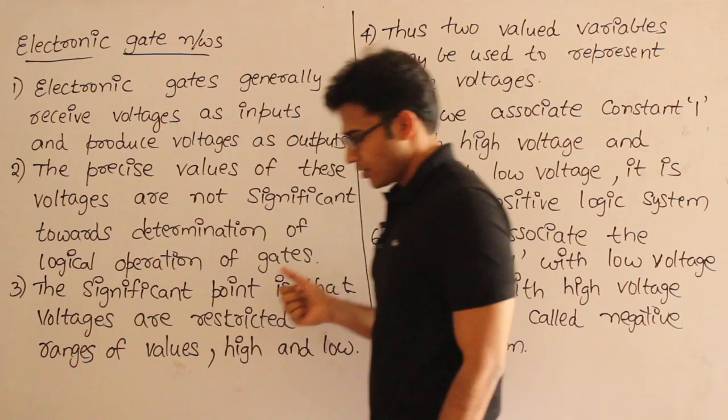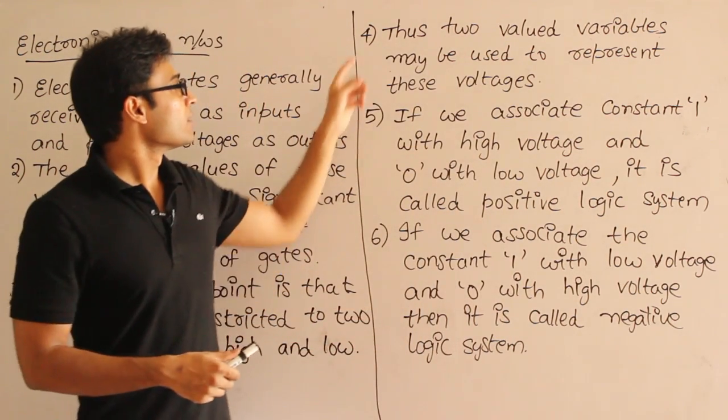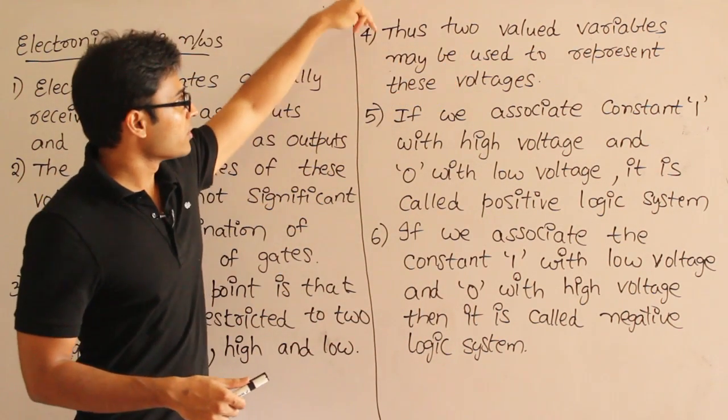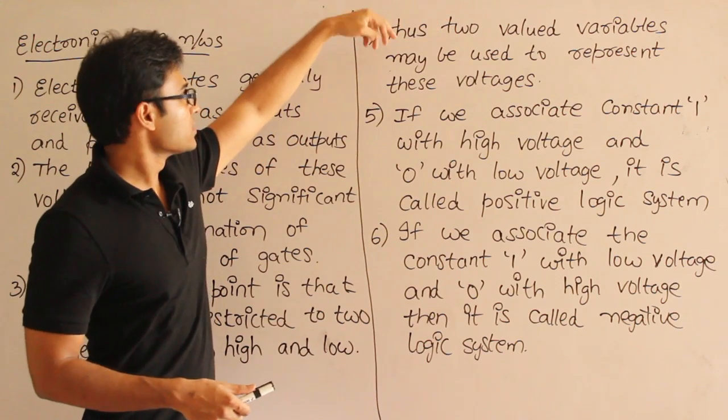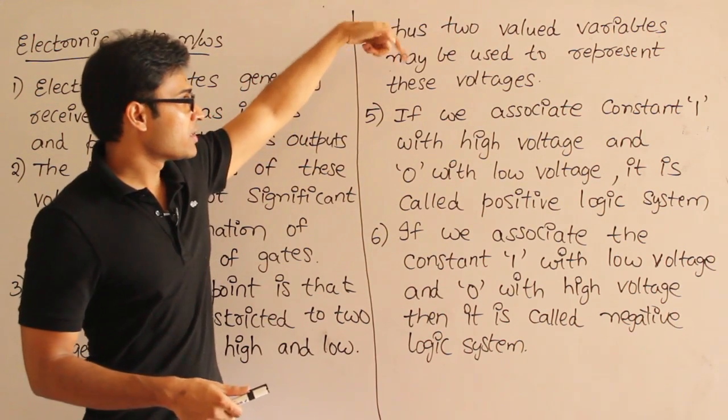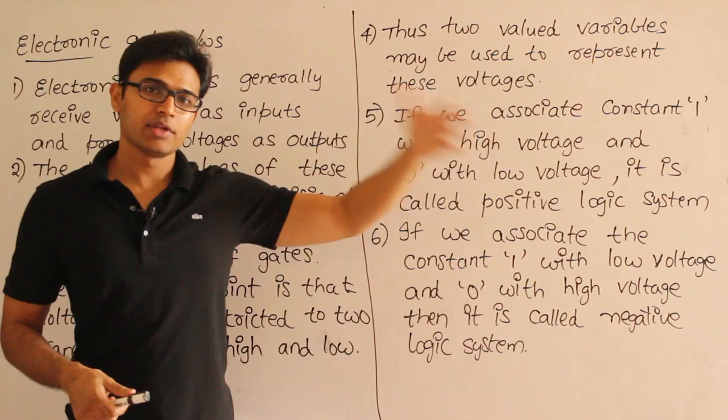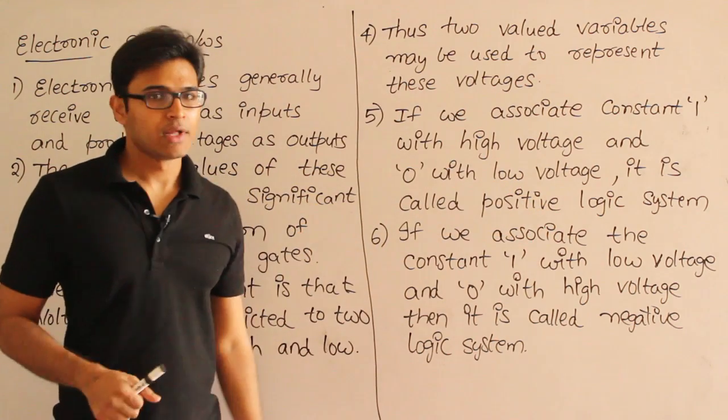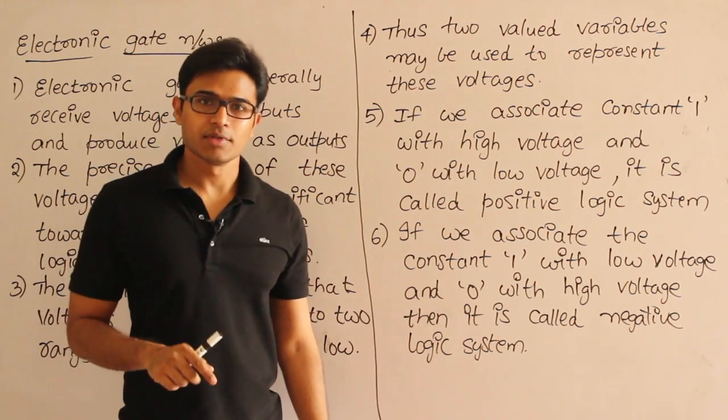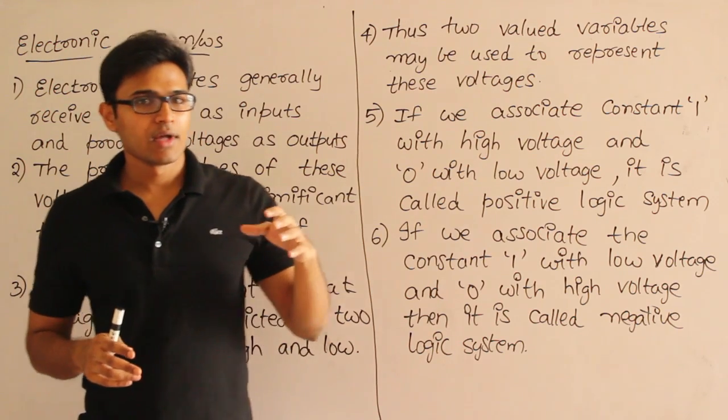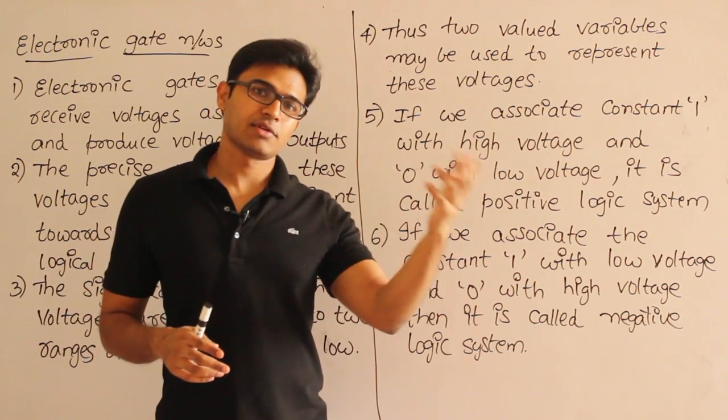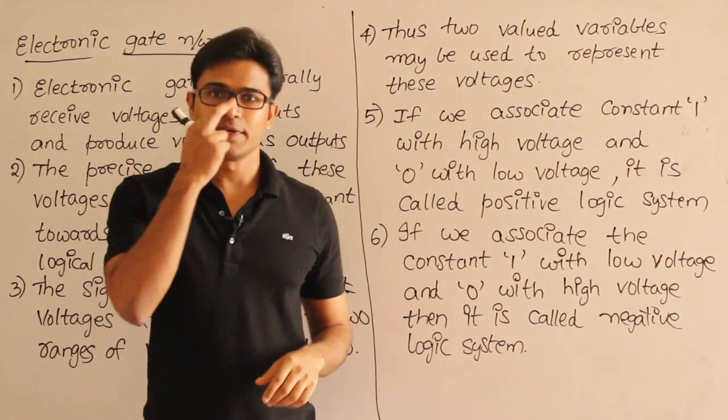This next point is: two-valued variables may be used to represent these voltages. Therefore, any input that you give and the output that you get, everything can be written as variables, so that it will be easy for us to construct the expression and then convert the expression into these electronic gates.